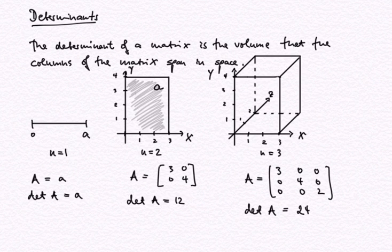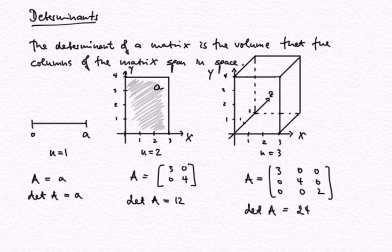If we look at the three drawings I made here and we look at the rightmost one, where we have a cuboid in a space defined by the axes x, y, and z, then we can all agree that this cuboid has a volume given by the product of the lengths of the sides — here 3 by 4 by 2.